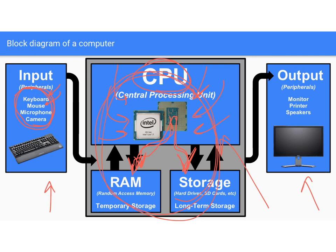Sometimes data goes from RAM back to the processor and then into long-term storage, so there's a transfer of data between these three areas. The CPU is where all calculations happen, RAM is for temporary storage, and your hard drive or SD card is where all long-term data storage happens.